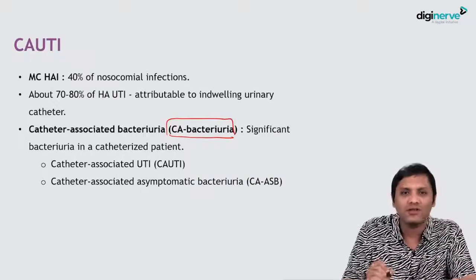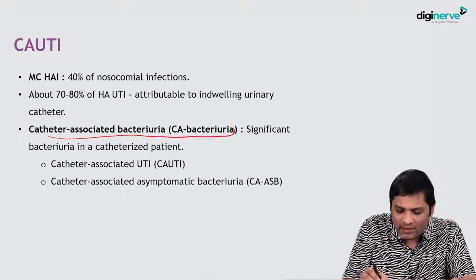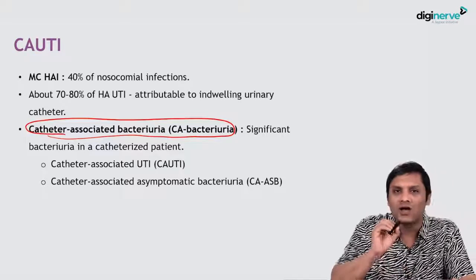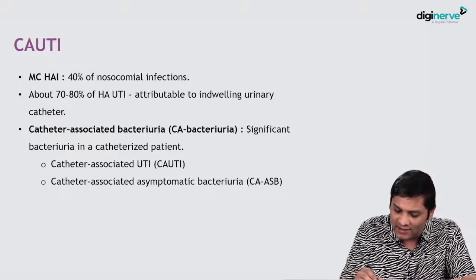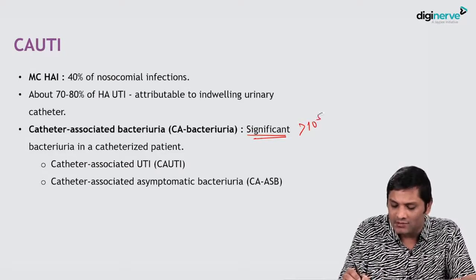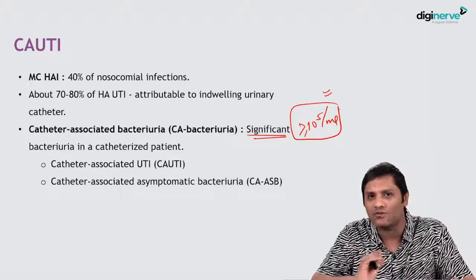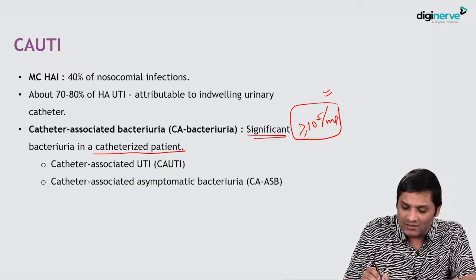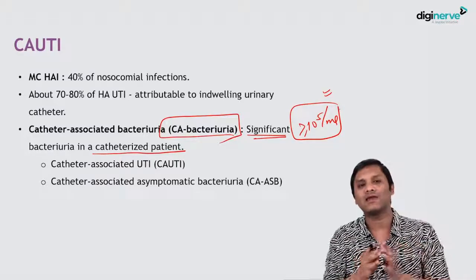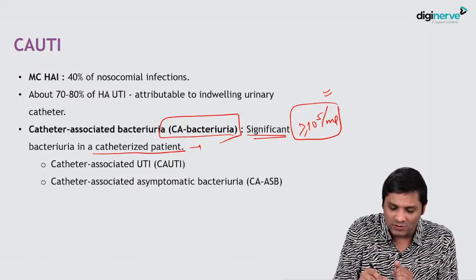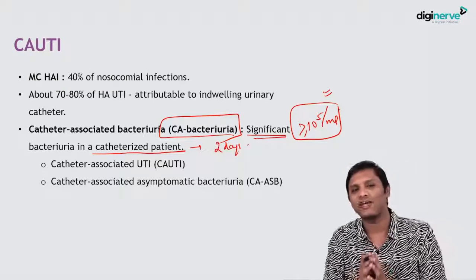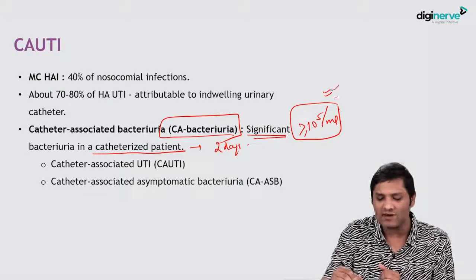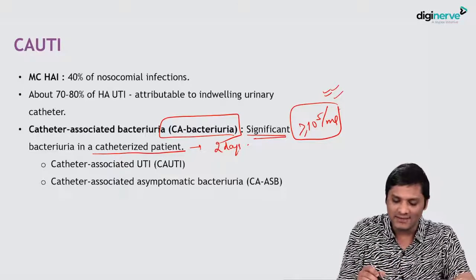There is a terminology called CABacteria, which means catheter-associated bacteriuria. The definition is: you must have a significant count of organism — at least more than 10^5 organisms per ml — in a catheterized patient who has had at least 2 days of catheterization. This is called CABacteria.